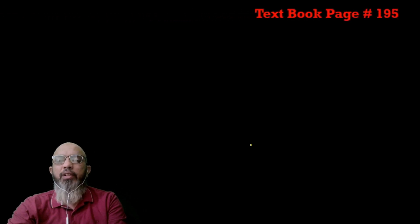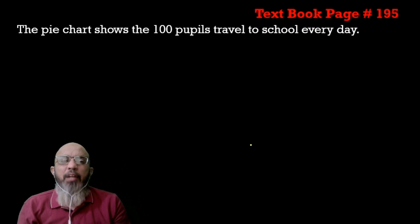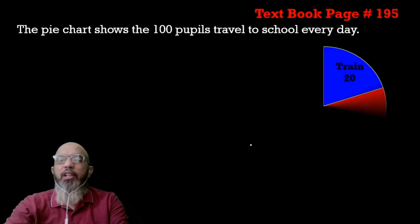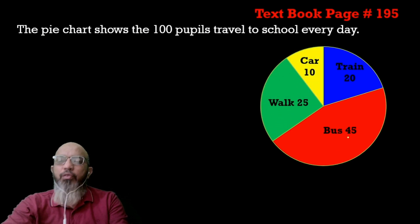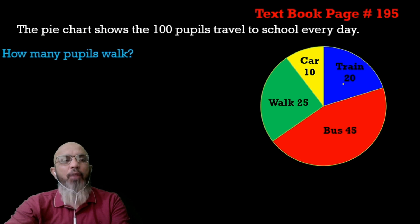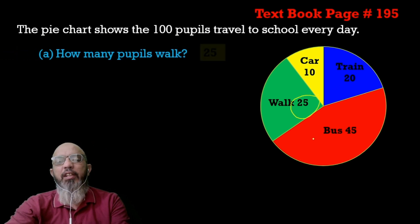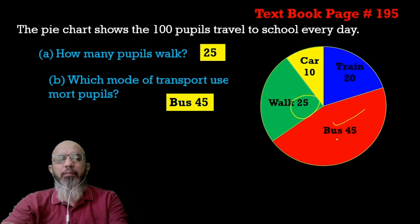Now come to your textbook question from page 195. The pie chart shows 100 people travelling to school every day by transport. Forty-five students use the bus, 25 walk, 10 go by car, and 20 go by train. The first question — how many people walk? Very easy: 25. The second question — which mode of transport do most people use? Most people use the bus.